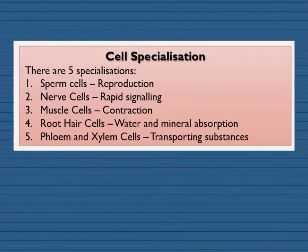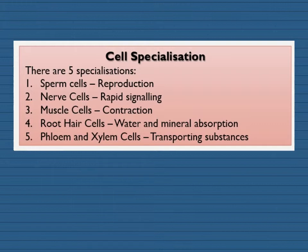There are six specialised cells that you will need to know: sperm cells, nerve cells, muscle cells, and for plants you'll need to know root hair cells, phloem, and xylem cells. You'll need to be able to recognise what they look like, understand their adaptations for how they work, and be able to describe their structures.